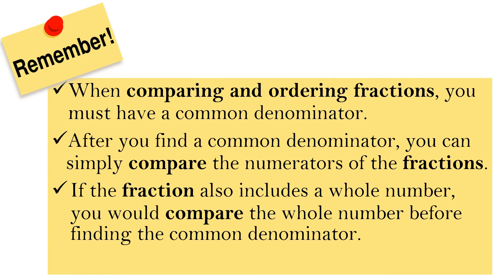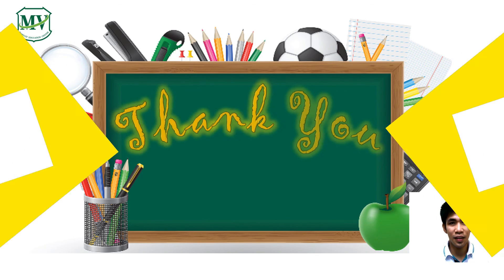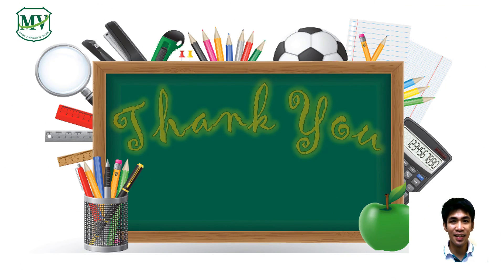To sum it up, here are some points to remember. First, when comparing and ordering fractions, you must have a common denominator. Next, after you find the common denominator, you can simply compare the numerators of the fractions. And last, if the fraction also includes a whole number, you would compare the whole numbers before finding the common denominator. That's all for today, class — happy learning! See you in the next episode.